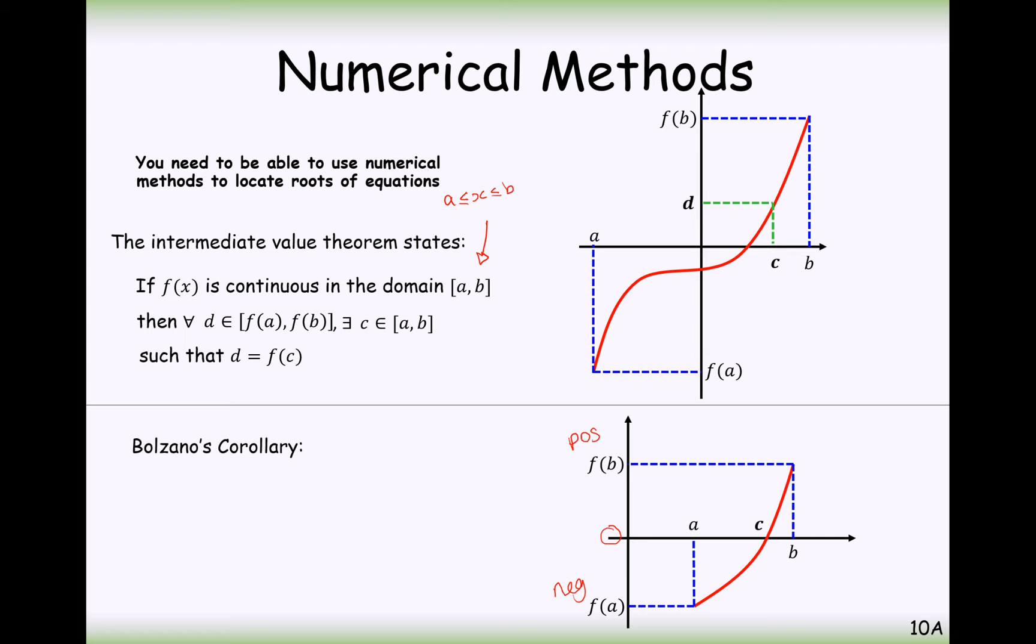The correct term for it is Bolzano's corollary, we don't need to remember that though. If a continuous function has values that are opposite signs in an interval, so one's positive, one's negative, then it must have a root in between this interval from A to B. Effectively, the C value here is the root for this equation. A root is when your function equals zero, so F of C here equals zero, that's what it means to be a root. Because there is a change in sign when we substitute in A and when we substitute in B, somewhere in between that A and B value, there will be a certain value for X, such that when you do substitute it in, you'll get zero as your output.